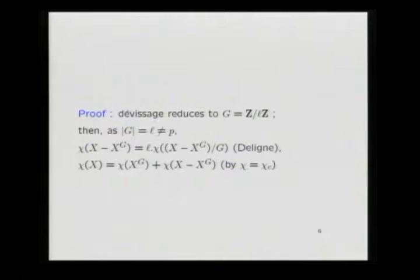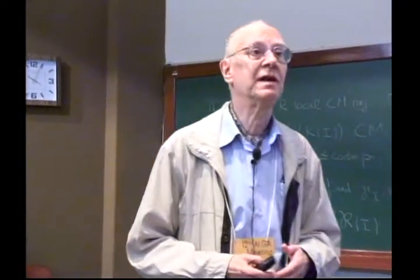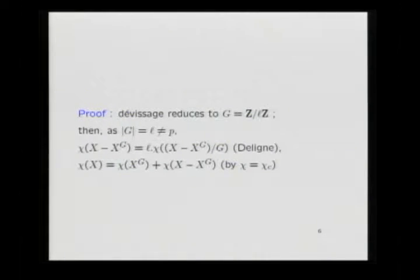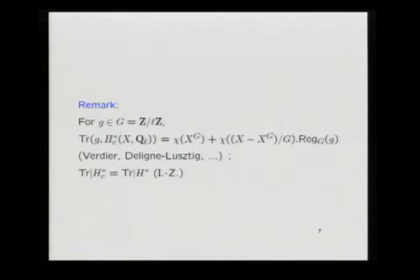The proof of this congruence is extremely simple. By dévissage on the group you reduce to the case where the group is cyclic of order L. Then outside the fixed point set the action is free, and so you get an étale cover of group Z/LZ. Since L is prime to the characteristic, the Euler–Poincaré characteristic of X minus X^G is L times the Euler characteristic of the quotient. Since Chi is additive, Chi of X equals Chi of the fixed point set plus Chi of the open complement, and you get the congruence.